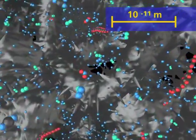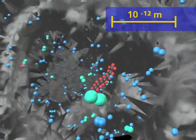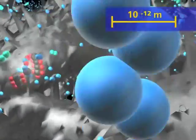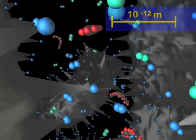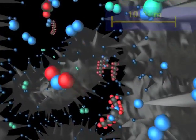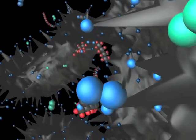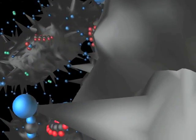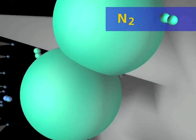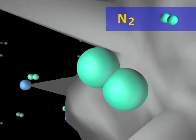Nitrogen molecules, oxygen molecules, carbon dioxide molecules, and water molecules bounce off the active centers.